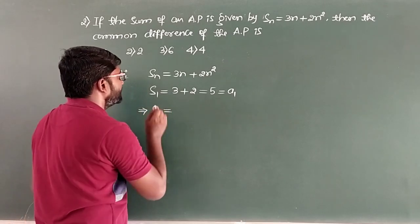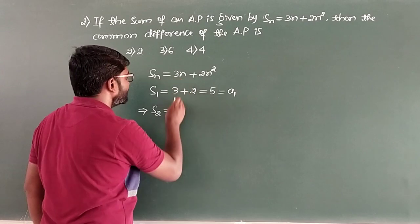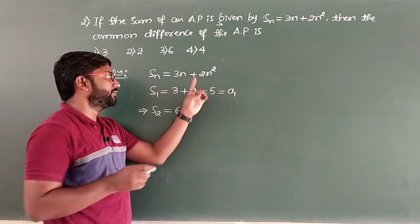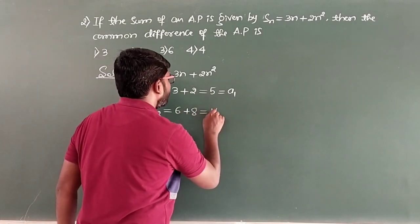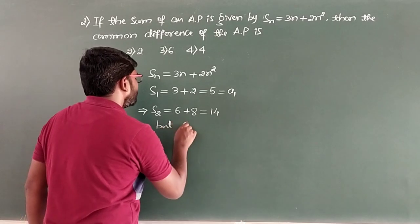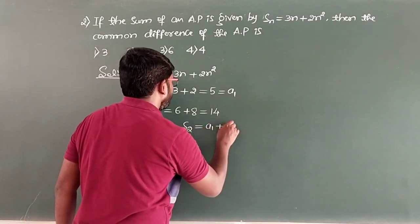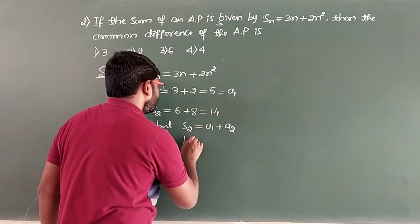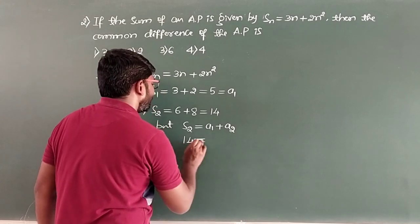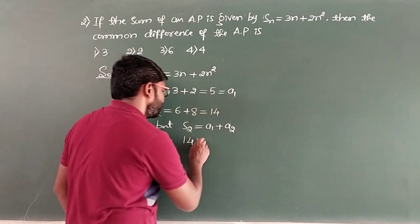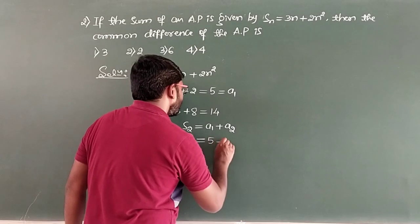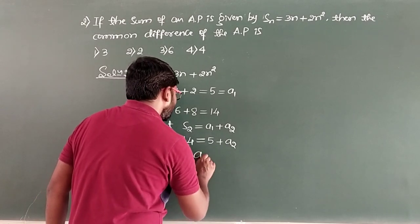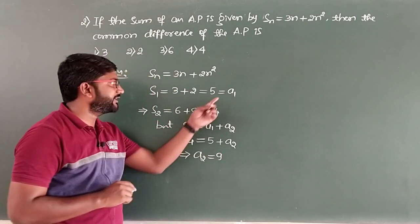S2 = 3×2 + 2×2² = 6 + 8 = 14. But S2 = A1 + A2, the sum of the first two terms. So 14 = 5 + A2, which gives A2 = 9. So we have got A1 = 5 and A2 = 9.